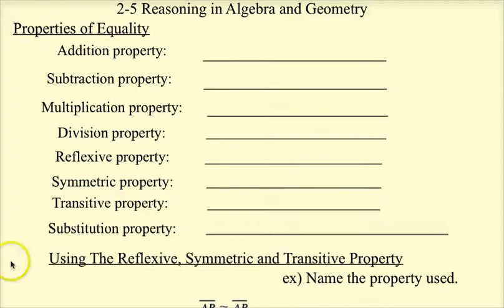There's going to be a lot of properties that you're going to learn today that you'll have to memorize. Some of them we'll use more than others. The first one is called the addition property. Basically, the addition property says that if I have two things equal, so if A equals B, and then I take something and add it to A, and I take the same thing and add it to B, so I'm adding C to A and I'm adding C to B.